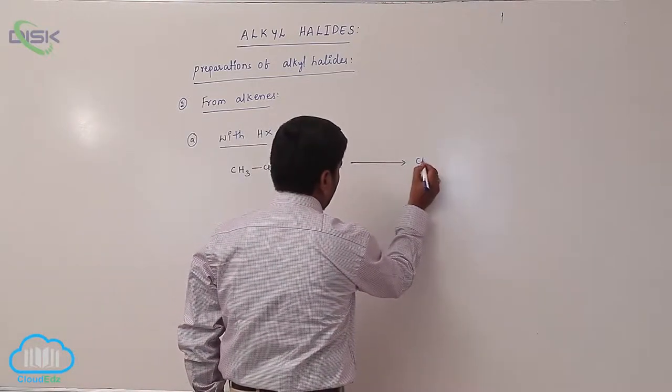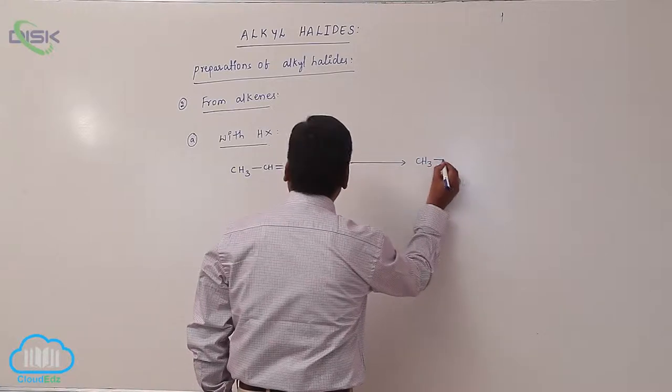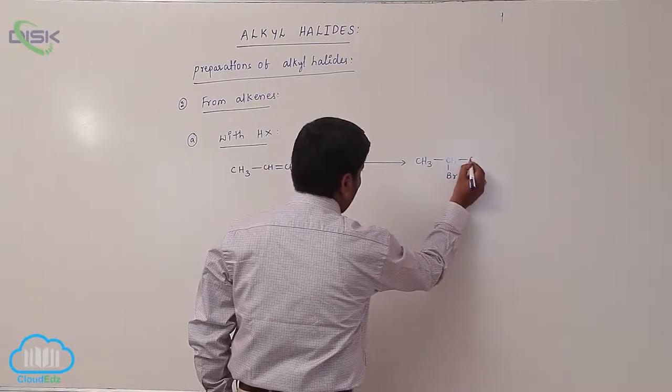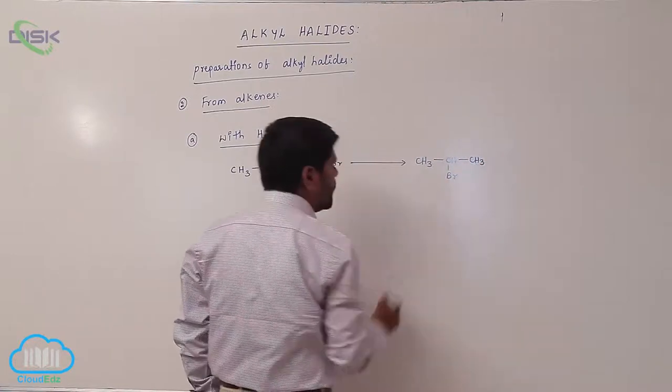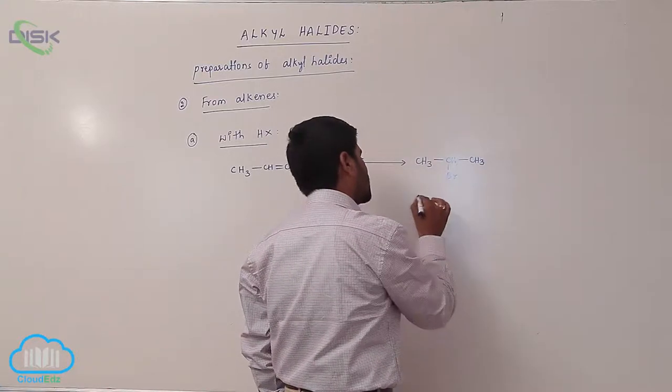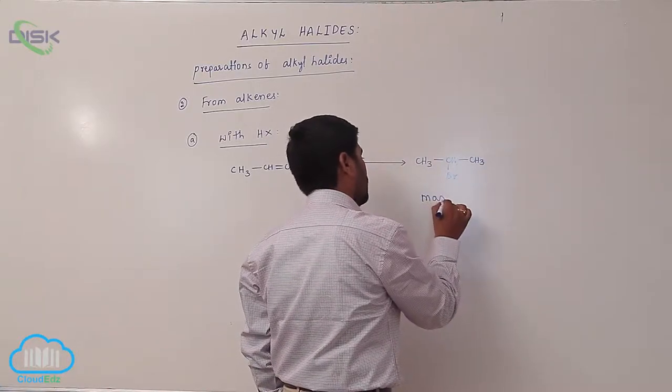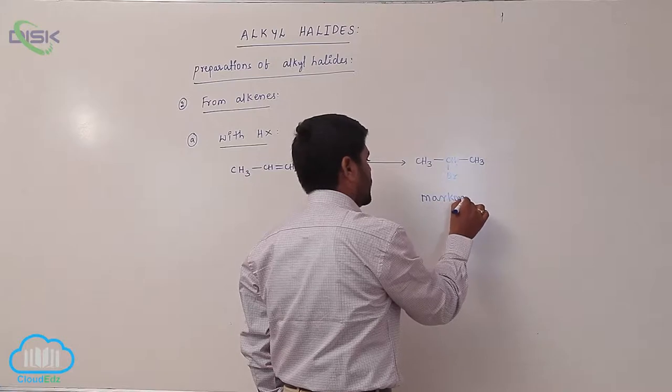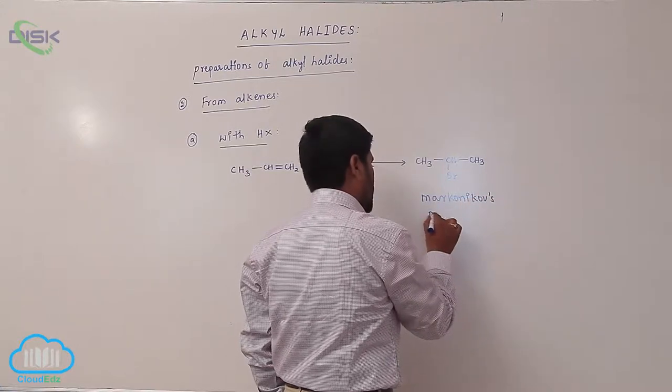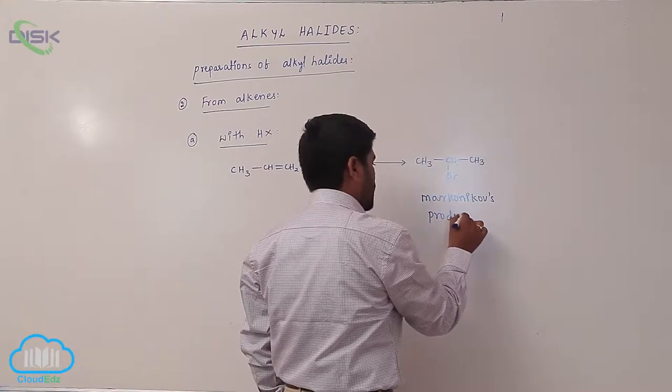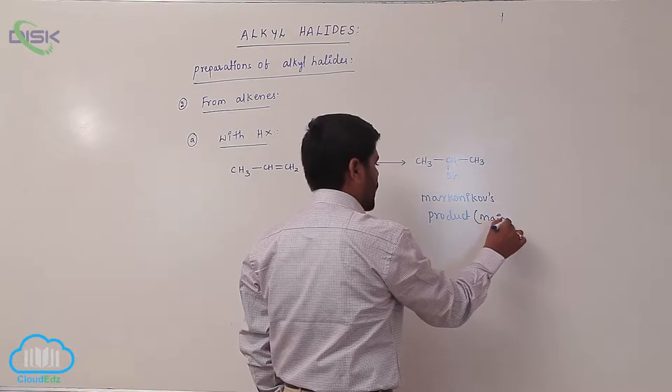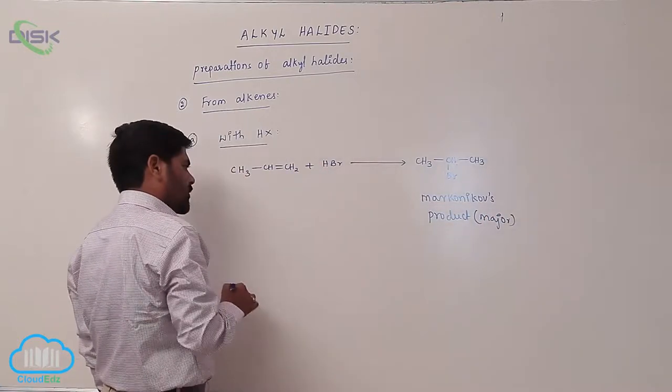So the product is CH3-CHBr-CH3, with a methyl group on the end. This particular product is known as the Markovnikov product. It is a major product.